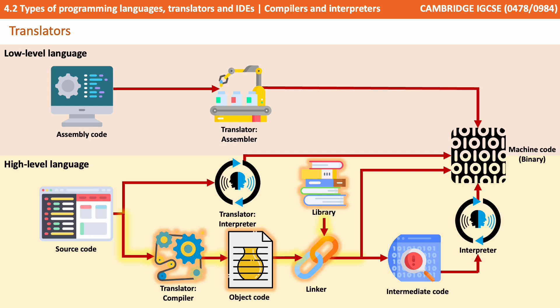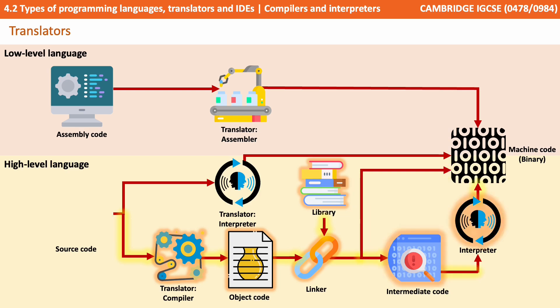The other option for high-level languages is to have our source code translated via a compiler. This creates what's called object code. A linker program can also pull in pre-written code from other external libraries and routines. At this point we can produce either the finished binary machine code, or we can produce what's called an intermediate or halfway code, which can then be further interpreted into machine code.